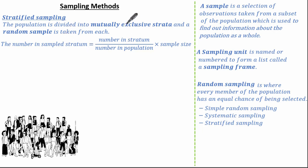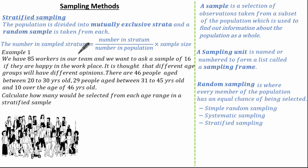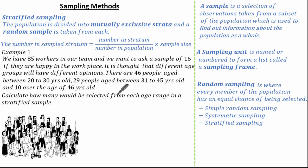In this example, we have 85 workers and we want to ask a sample of 16 if they're happy in the workplace. It's thought that different age groups will have different opinions. There are 46 people aged 20–30, 29 people aged 31–45, and 10 people aged 46 or over. We're asked to calculate how many would be selected from each age range in a stratified sample.